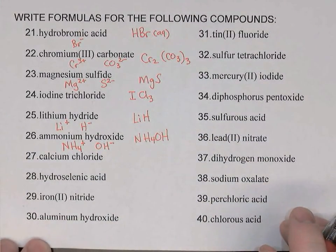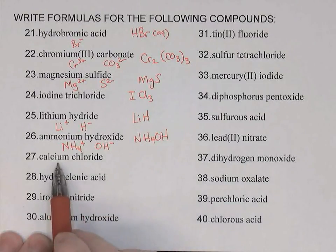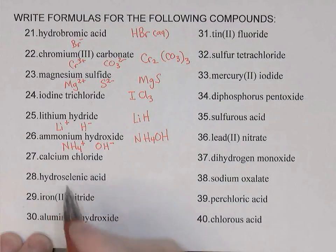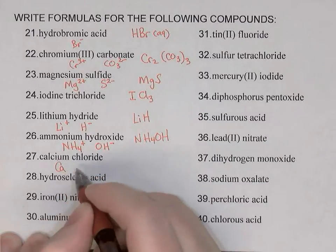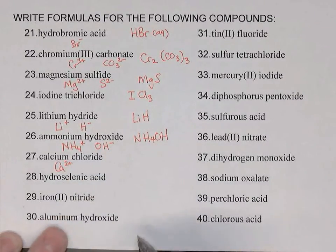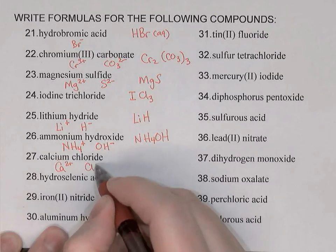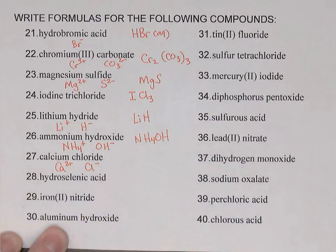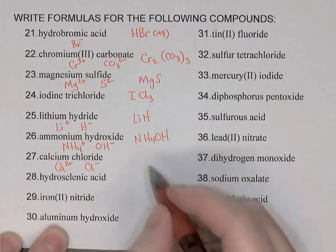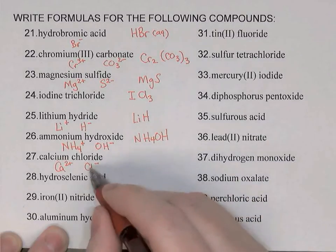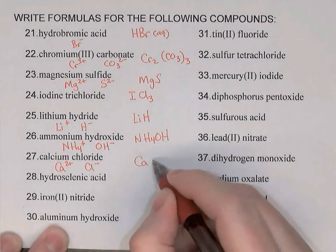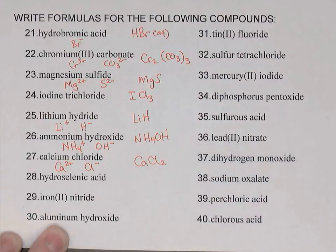Calcium chloride is ionic — calcium is a metal and chloride is a non-metal. Calcium being an alkaline earth metal is 2+. Chloride being a halogen is -1. Two chlorides are needed to cancel calcium's charge, so CaCl2.